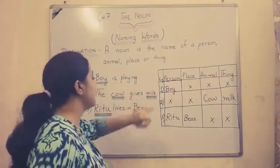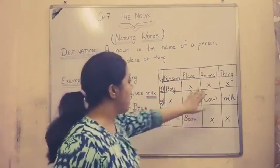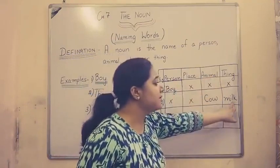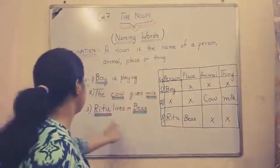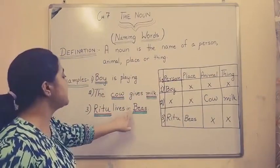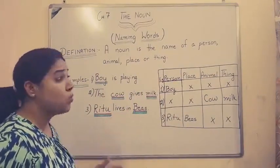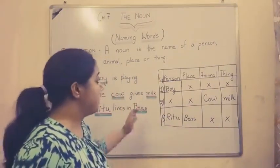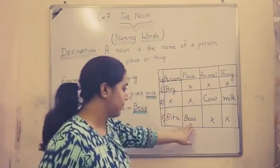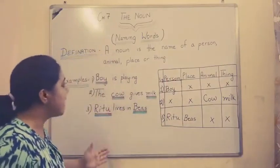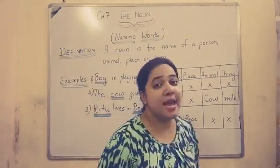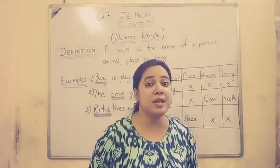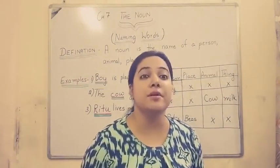The cow gives milk. What is the cow? Cow is the category of animal. And what is milk? It's a thing. Third example: Ritu lives in Vyas. What is Ritu? Ritu is the name of a person. And what is Vyas? Vyas is a place. These examples show that everything in this world has a name, and it's very important to have one.